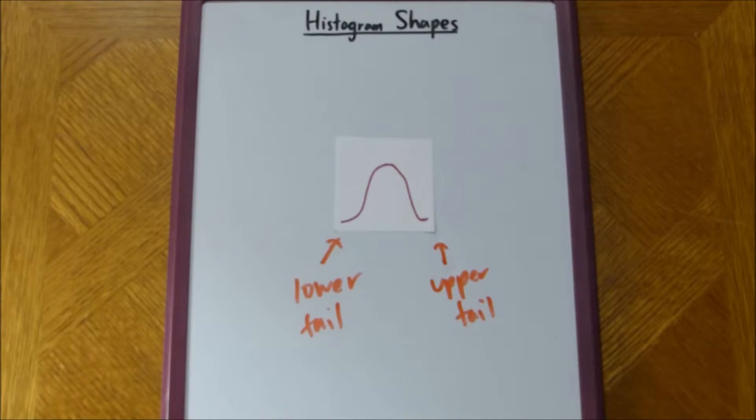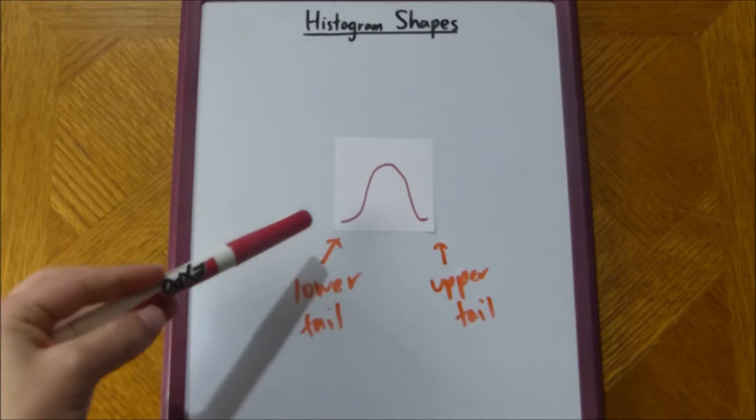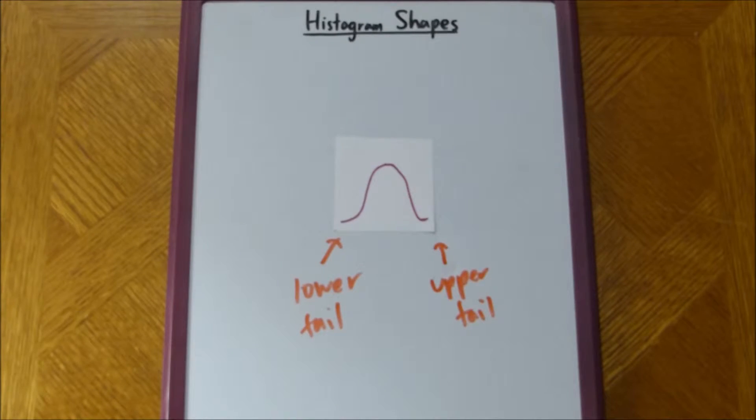So, the names kind of make sense if you're starting your histogram down here, and then you move up, lower, upper, makes sense, right?